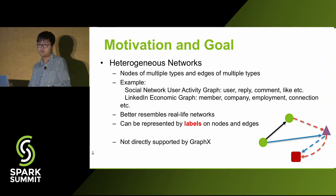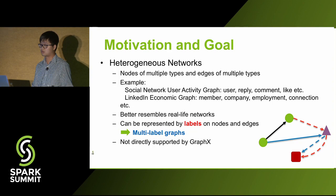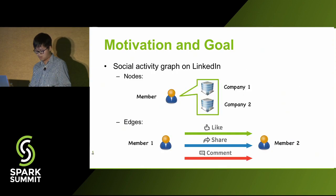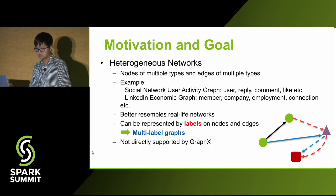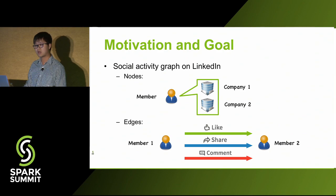The heterogeneous network data structure better resembles our real-life networks. When we represent a heterogeneous network, one simple way is to attach labels on the nodes to mark the differences, as well as labels on the edges to mark differences between them. This leads to what we want to discuss today: multi-label graphs. Unfortunately, this is not currently directly supported by GraphX. Let's take a look at one real-life use case for a heterogeneous network or multi-label graph.